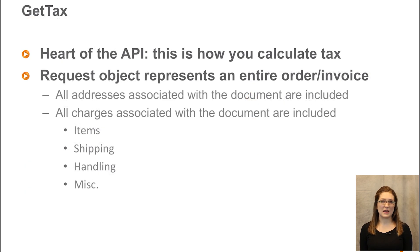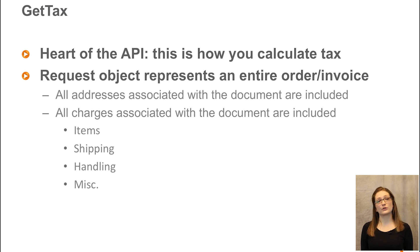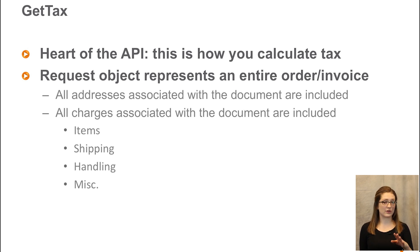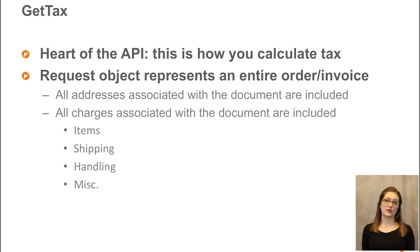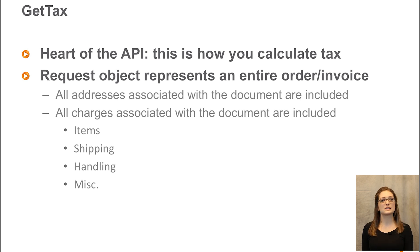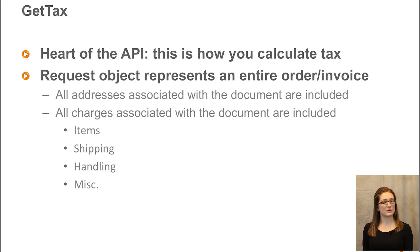The first method is Get Tax. This is really the heart of our API — this is how you are going to calculate tax and record your documents. The request object for this resource represents an entire order or invoice. All the addresses associated with the document have to be included here, whether they're document level or line level, and all charges associated with your document need to be included. So that includes items sold, services, shipping, handling, miscellaneous charges — all of that stuff shows up as line items.